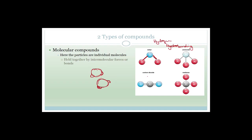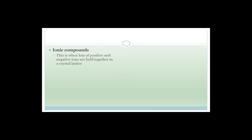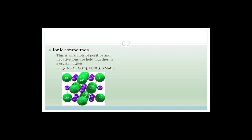So with molecular compounds — if I had to look under a microscope, I would see individual molecules of water, individual molecules of ammonia. Whereas with ionic compounds, we don't have individual molecules. If I looked at it under a microscope, I would see atoms arranged in a beautiful crystal lattice. Typical examples of ionic compounds are sodium chloride, copper sulfate, lead nitrate, and potassium permanganate.